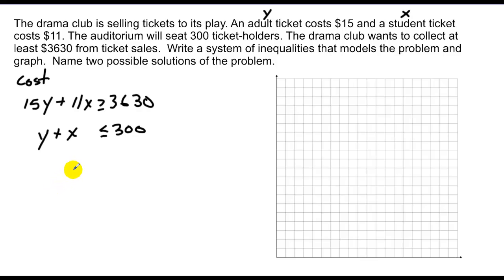So now I'll take and graph these using intercepts. This is the easiest. I'll get 0 in for x and I get out 300 for y. And 0 in for y, and I get 300 for x. So now I'll take and set x equal to 0 up here. When I get x value of 0, then my y value is 242. When my y value is 0, my x value is 330.